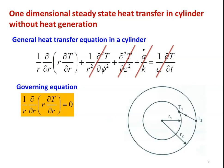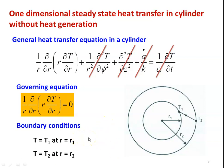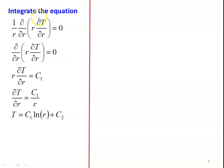We consider a hollow cylinder of inner radius r1, outer radius r2. The inner surface temperature is T1 and outer surface temperature is T2. The boundary conditions are T = T1 at r = r1 and T = T2 at r = r2. Integrating the governing equation, multiplying through by r: ∂/∂r(r · ∂T/∂r) = 0. Integrating once gives r · ∂T/∂r = C1.